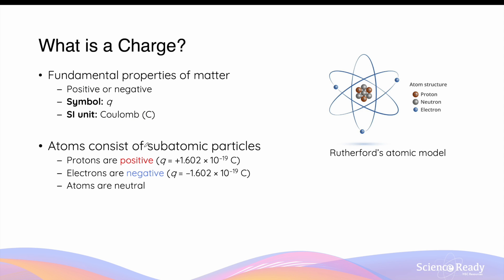The reason why all types of matter have this property called charge is because the underlying building block of matter — atoms — consists of smaller subatomic particles which themselves have charge. For example, in the simple Rutherford's atomic model, we have protons and neutrons residing in the nucleus, the central part of the atom, with electrons orbiting the nucleus.